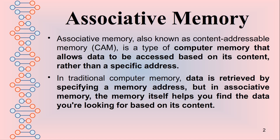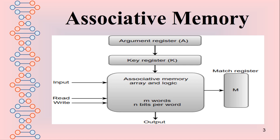That's why this is called as content addressable memory. In the content addressable memory, it consists of an argument register, then the key register, then the associative memory array and logic. Here the match register is available. Finally, we get the output.